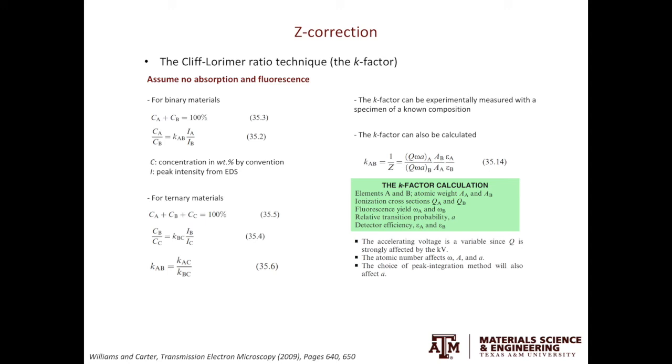Omega is the fluorescence yield, A is the relative transition probability, and epsilon is the detector efficiency. These parameters are highly sensitive to the instrument you choose and the specimen you use.